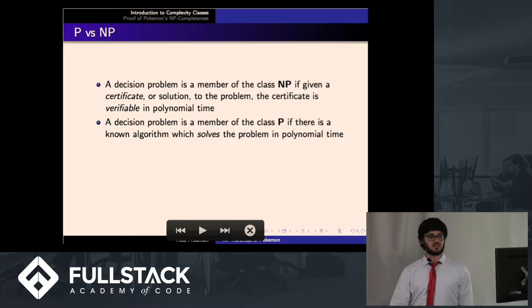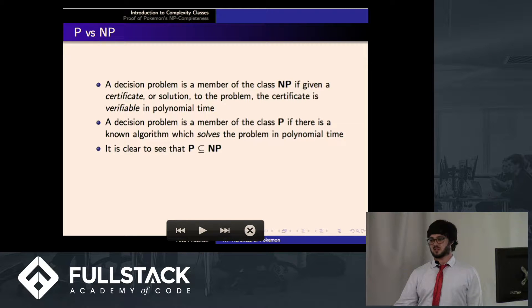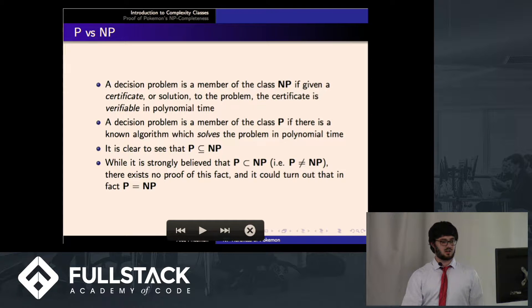A decision problem is a member of the class P if there's a known algorithm which solves the problem in polynomial time. So it's clear that the class P is a subset of NP in some way because if you can solve the problem in polynomial time, clearly you can verify if a solution is correct. And it's strongly believed that P is a proper subset of NP, meaning that P is not equal to NP, but there's actually no proof of this currently. So it could turn out that someone could maybe someday prove this, and that would be a pretty crazy result if that were to occur.